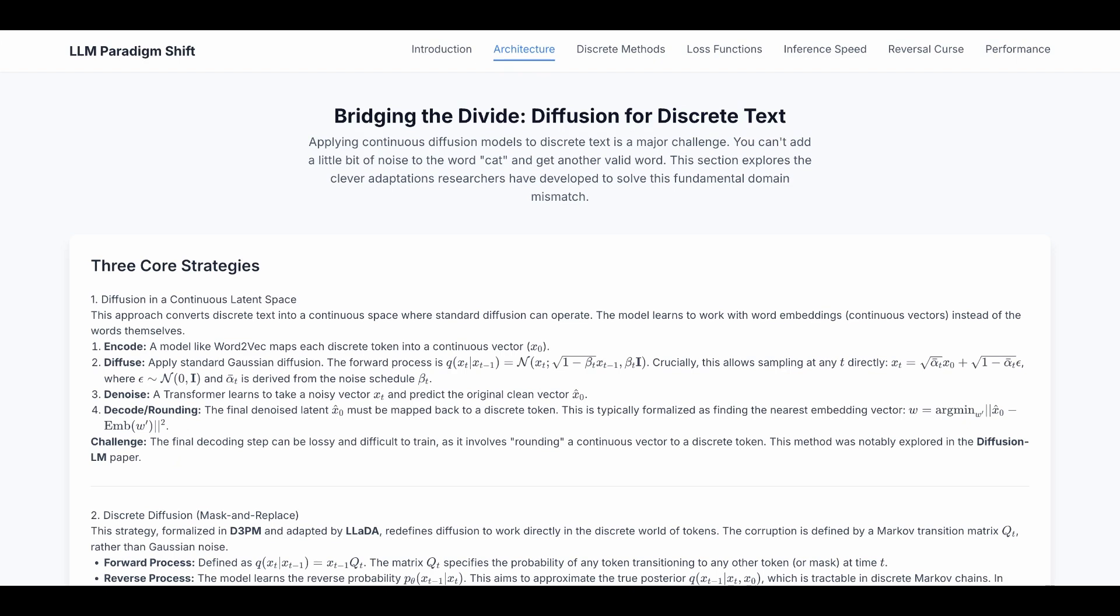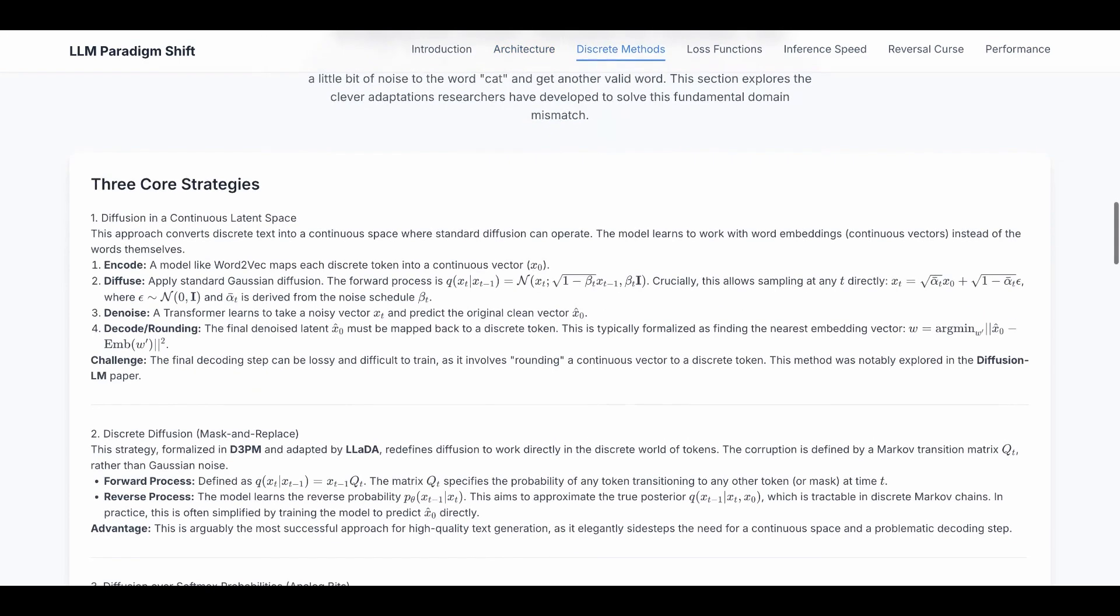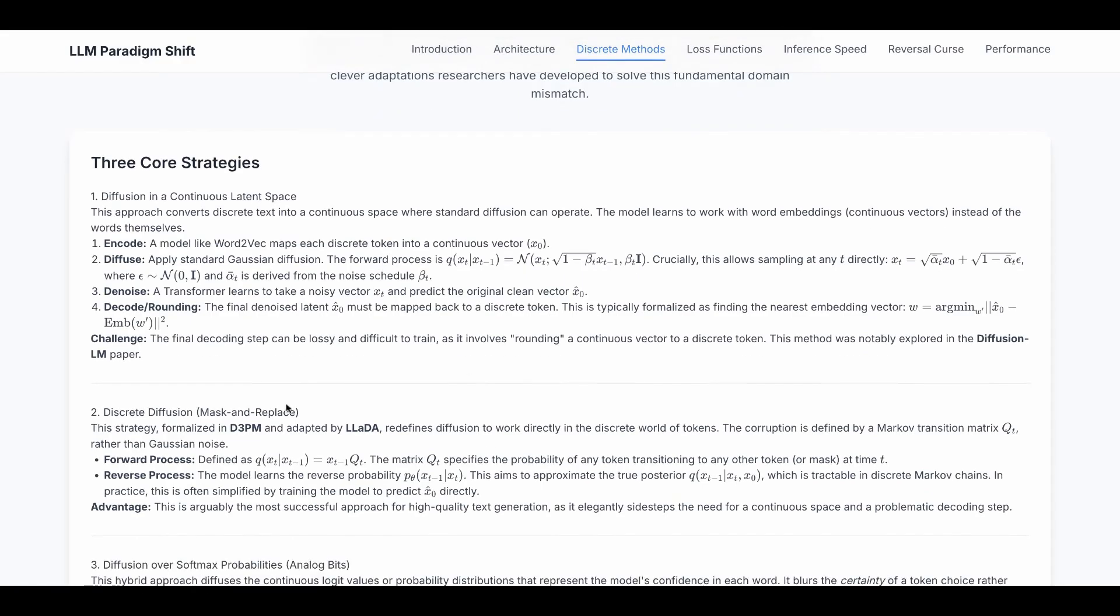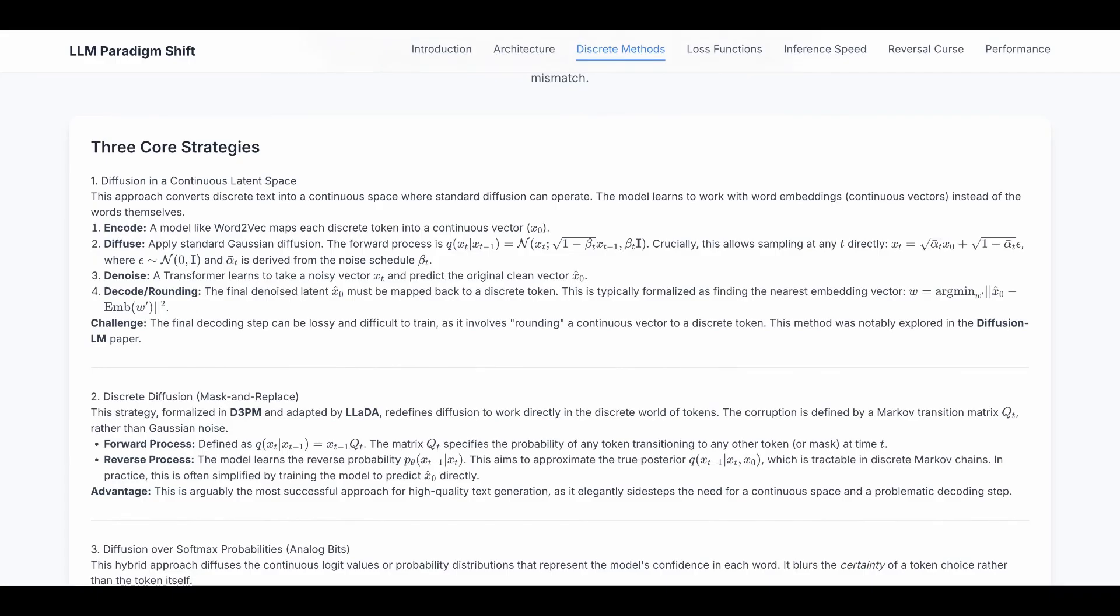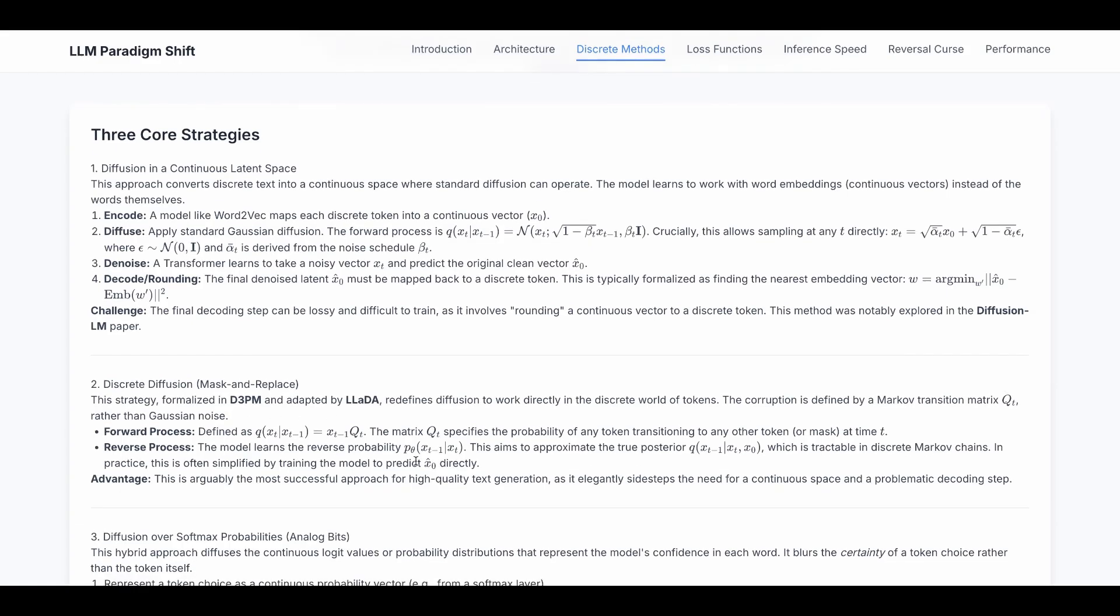This section explores the clever adaptations researchers have developed to solve this fundamental mismatch. There are three core strategies, and we have already gone through the discrete diffusion mask and replace. This redefines diffusion to work directly in the discrete world of tokens. The corruption is defined by a Markov transition matrix rather than the Gaussian noise. In the forward process, we try to replace actual words with mask token iteratively until it's fully destroyed. And the reverse process tries to reverse it, bring back a fully masked sentence back to real words.